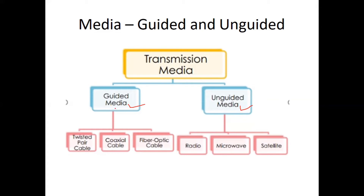In the case of wired media, the signal travels through a physical medium. Examples include twisted pair cable, coaxial cable, and optical fiber cable — all of these are examples of guided media.